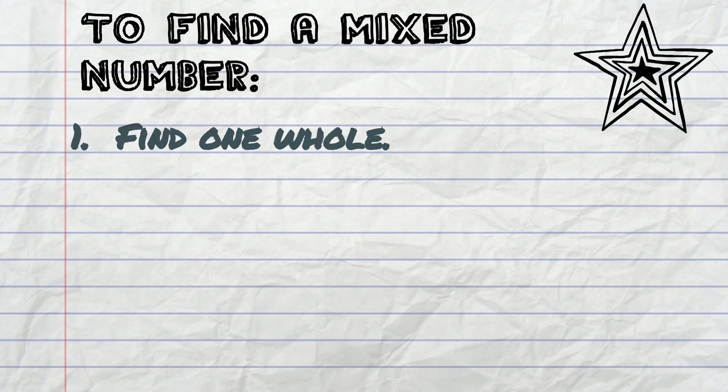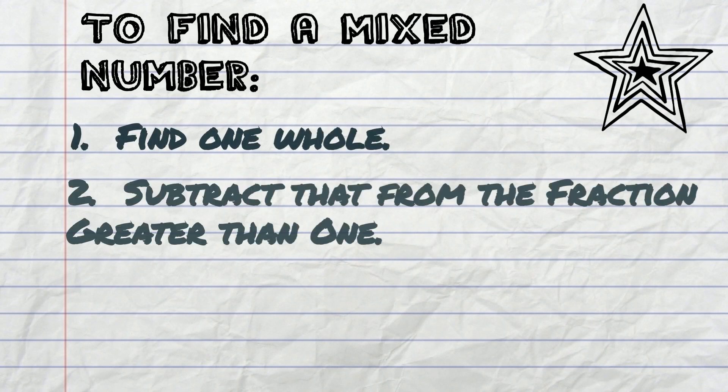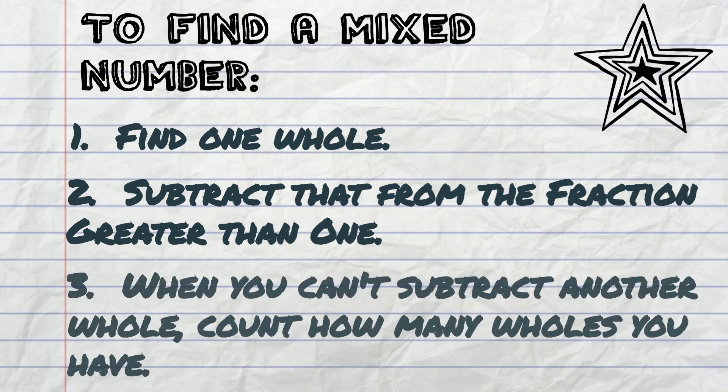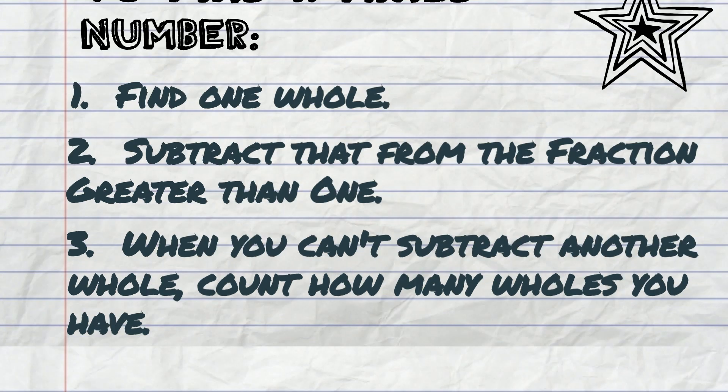Today you learned to find a mixed number by first finding 1 whole. Then you subtract 1 whole from the fraction greater than 1 until you can't subtract any more. Count how many wholes you have and put it next to the fraction that you have left. Great job, everyone! Keep practicing!